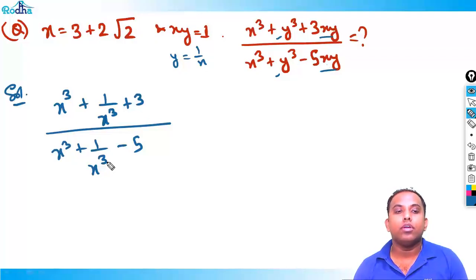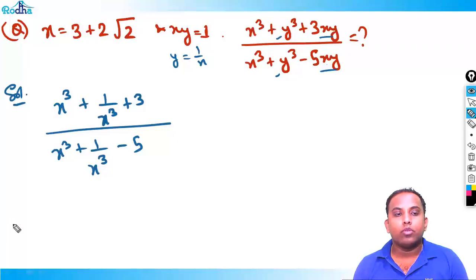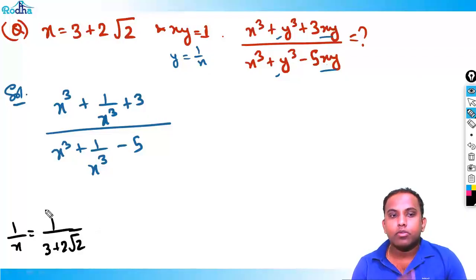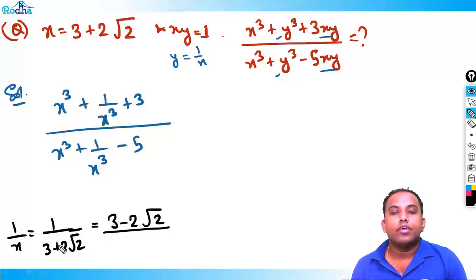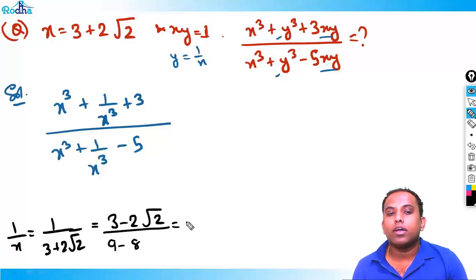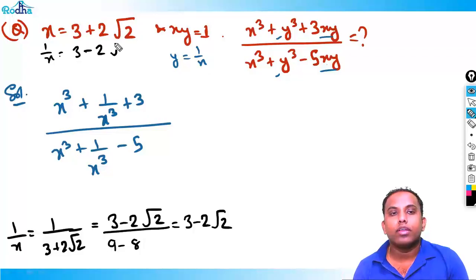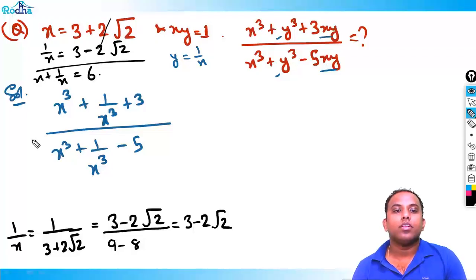To find 1/x, rationalize 1/(3 + 2√2) by multiplying by (3 - 2√2)/(3 - 2√2). The denominator becomes 3² - (2√2)² = 9 - 8 = 1, so 1/x = 3 - 2√2. Adding: x + 1/x = (3 + 2√2) + (3 - 2√2) = 6.